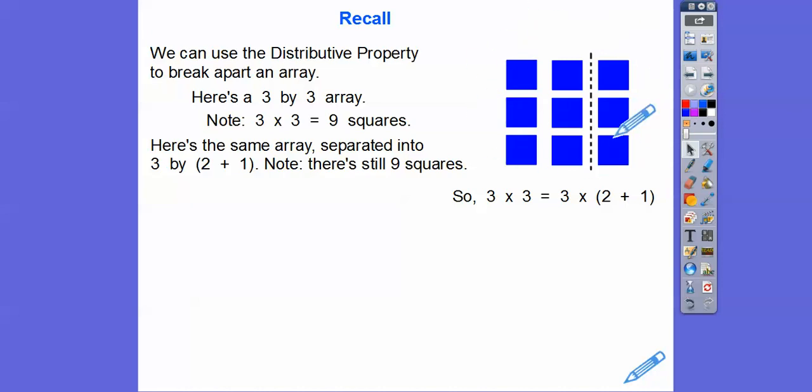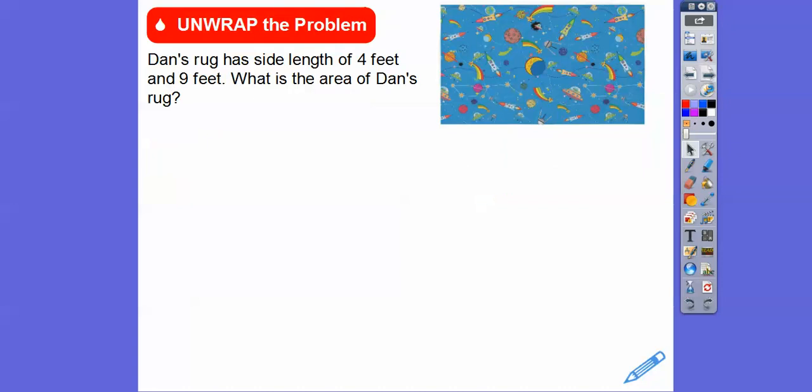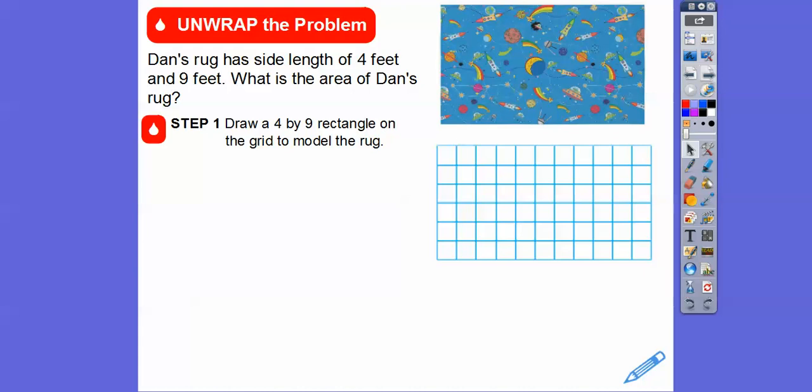So that's what we're going to do, is cut them up right here. All right, so let's use this rectangle right here. Dan's rug has a size of 4 feet and 9 feet. What's the area of Dan's rug? So what our textbook is asking is to draw a 4 by 9 rectangle on this grid right here. So here's 4 squares by 9 squares.